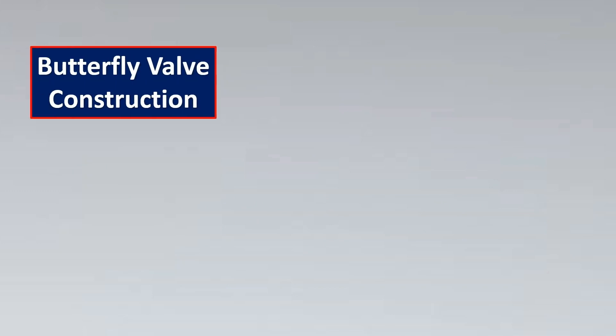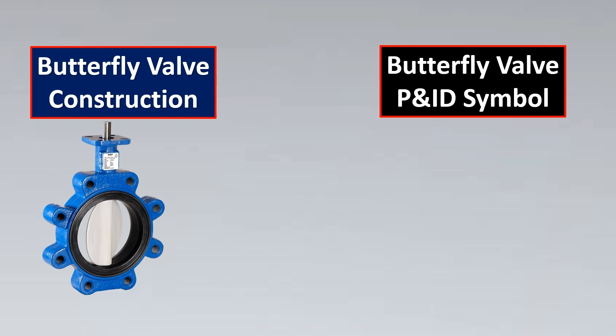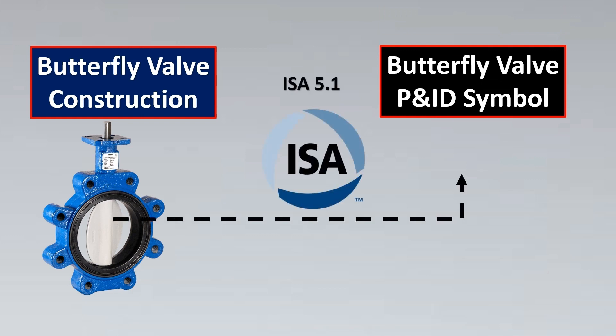Now let's look at another interesting example — the butterfly valve. It's difficult to draw an actual butterfly in between, so how is the butterfly symbol shown? As per ISA 5.1, imagine the two ends of the valve, and then the butterfly is kind of like a vane in between that is opening and closing — shown with a straight line.